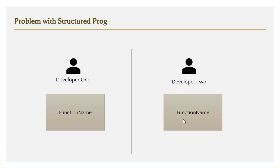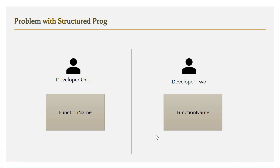But when we merge these two files we face a problem: since the two developers are working independently, there is every possibility they might have used the same function names and the same variable names. Once we merge this code into one file, we get all these conflicts and compilation issues. The question is: how can we modularize the application so developers can work individually and merge code without conflicts?